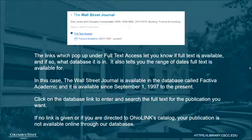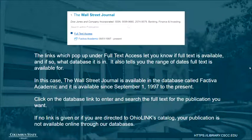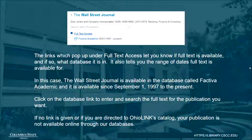Click on the database link to enter and search the full text for the publication you want. If no link is given, or if you are directed to OhioLINK's catalog, your publication is not available online through our databases.